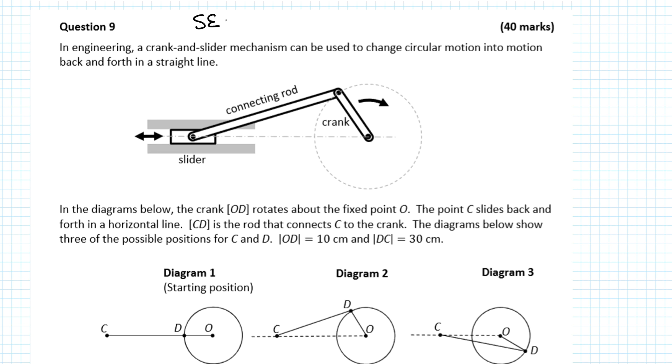In this video we'll be looking at the SEC 2018 higher level maths paper 2, question 9, and that's leaving cert as well. If you're doing junior cert, you can ignore this video. In engineering, a crank and slider mechanism can be used to change circular motion into motion back and forth in a straight line.